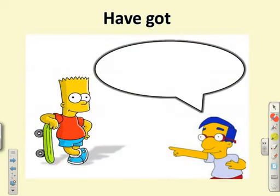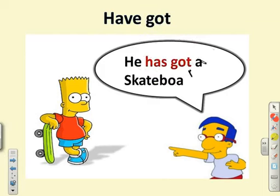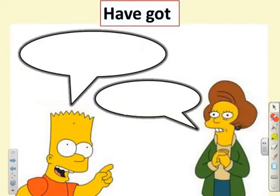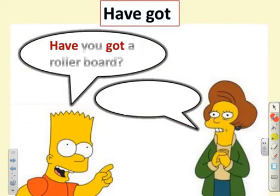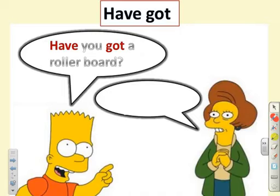Look at that picture. How do you form a question? He has got a skateboard. I want to form a question. Start with 'have.' What comes after 'have'? The subject — 'you.' What comes after 'you'? 'Got.' What do you put at the end? A question mark. So the question is: have you got a skateboard? What's the answer? No, I haven't. Great job!